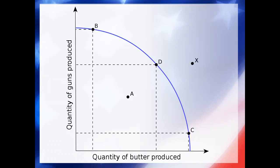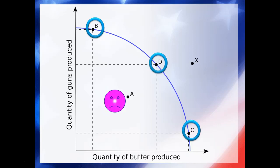The production possibilities curve is not a fixed point — it's more of a range of options and opportunities. This blue line is the production possibilities frontier. Beyond this place, we cannot currently produce. When we are producing at max efficiency, we are at anywhere on the curve: B, C, or D. When we're producing inefficiently — not using all of the technology and resources that we have — we are at position A.